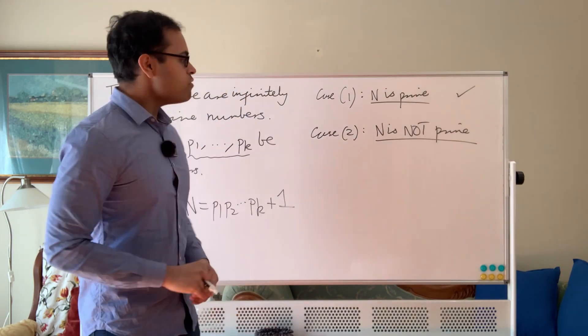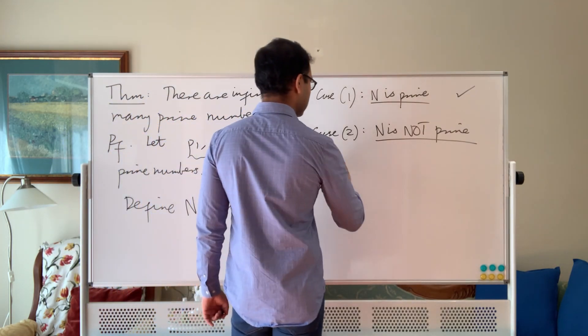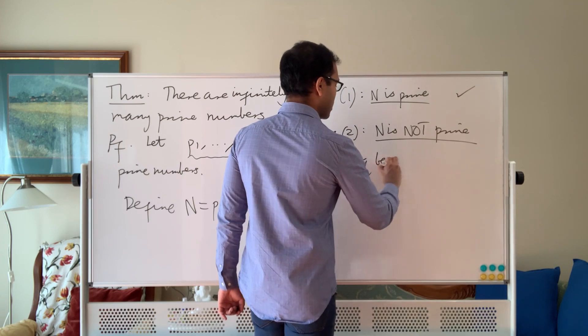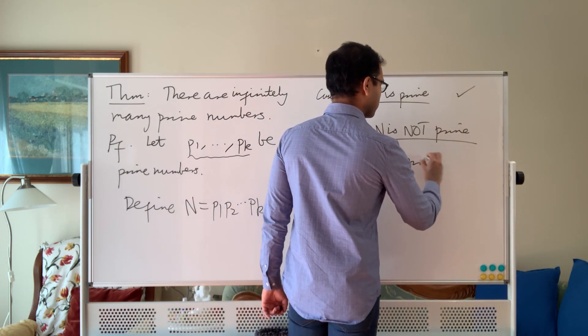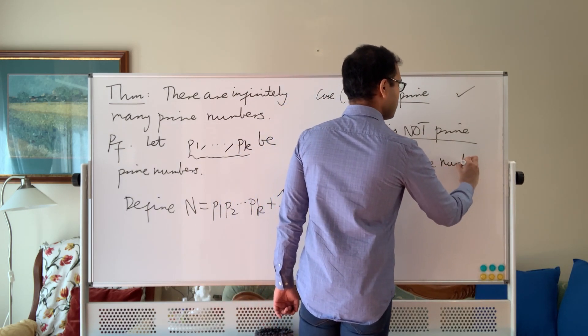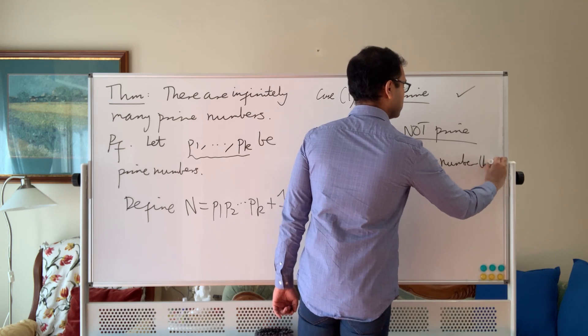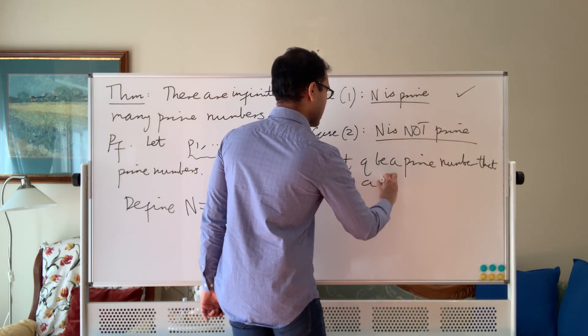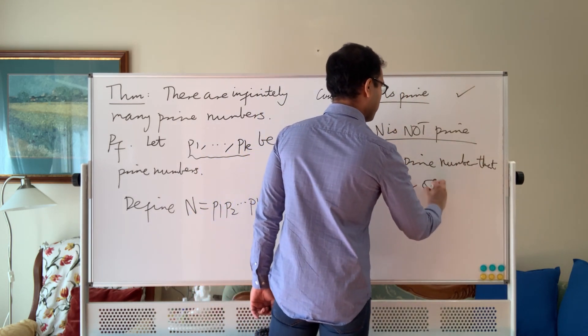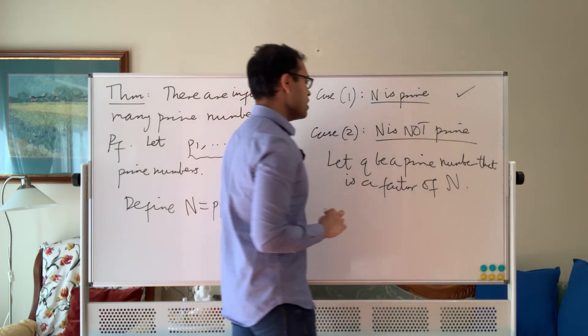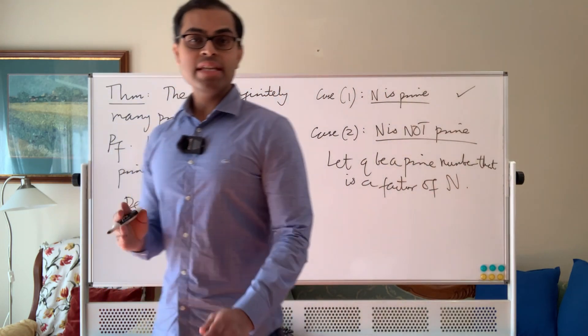So every number has a prime factor. So let q be a prime number that is a factor of N.